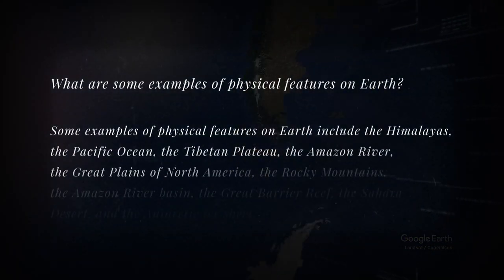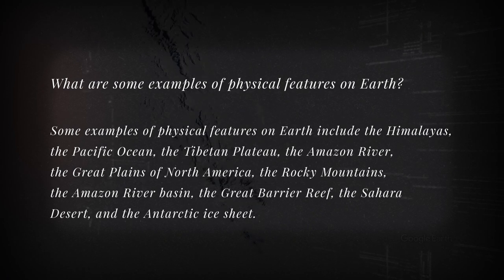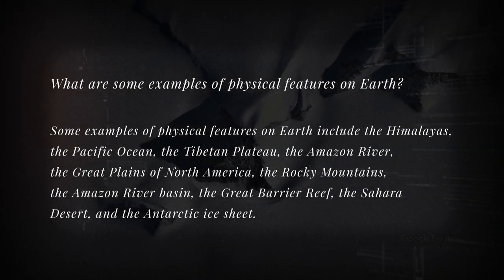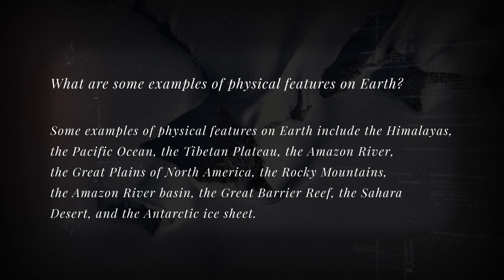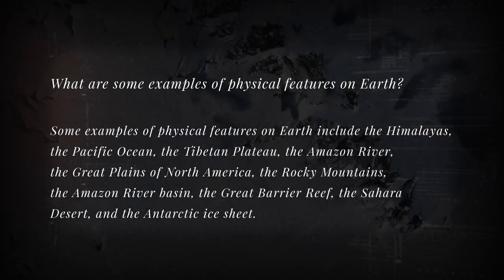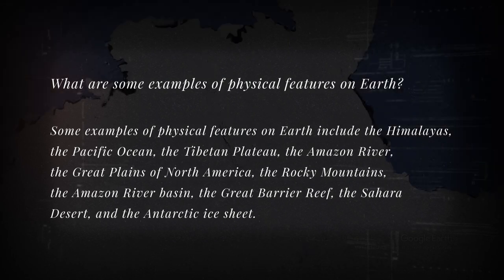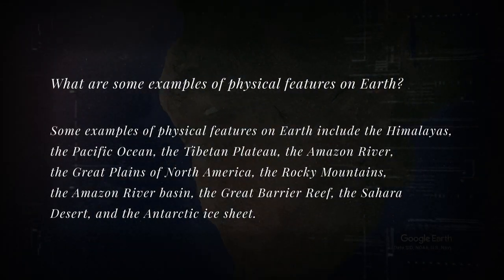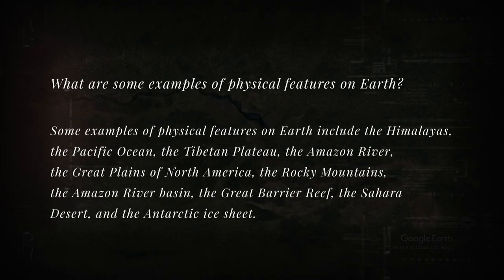What are some examples of physical features on Earth? Some examples include the Himalayas, the Pacific Ocean, the Tibetan Plateau, the Amazon River, the Great Plains of North America, the Rocky Mountains, the Amazon River Basin, the Great Barrier Reef, the Sahara Desert, and the Antarctic Ice Sheet.